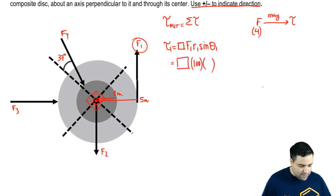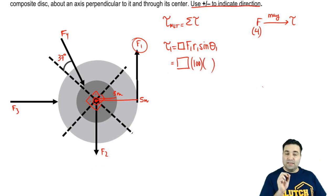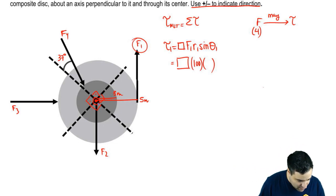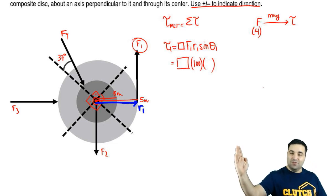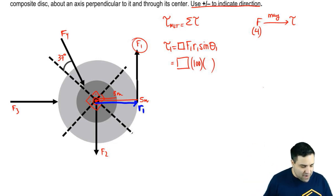So the R vector is the distance, is the vector from the axis of rotation to the point where the force happens. In this case, the R vector for F1 is an arrow this way. This is R1. And R1 has a length of the outer disk, which is five. Okay? And then sine of theta.